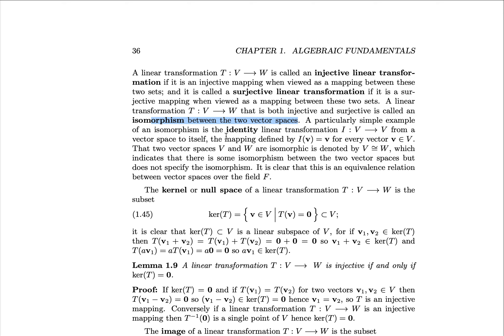A particularly simple example of one of these is the identity linear transformation from a vector space V to itself, where we define I of V equal to the vector V for every vector V in V. We denote that two vector spaces V and W are isomorphic by writing V isomorphic to W, similar to the symbol for congruence found in geometry. This notation indicates that there exists some isomorphism between the two vector spaces, but it does not specify exactly what it is.